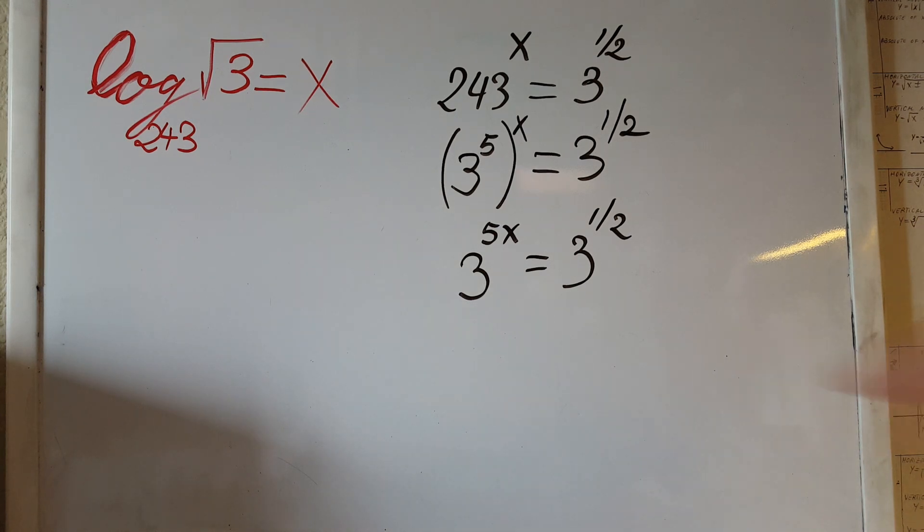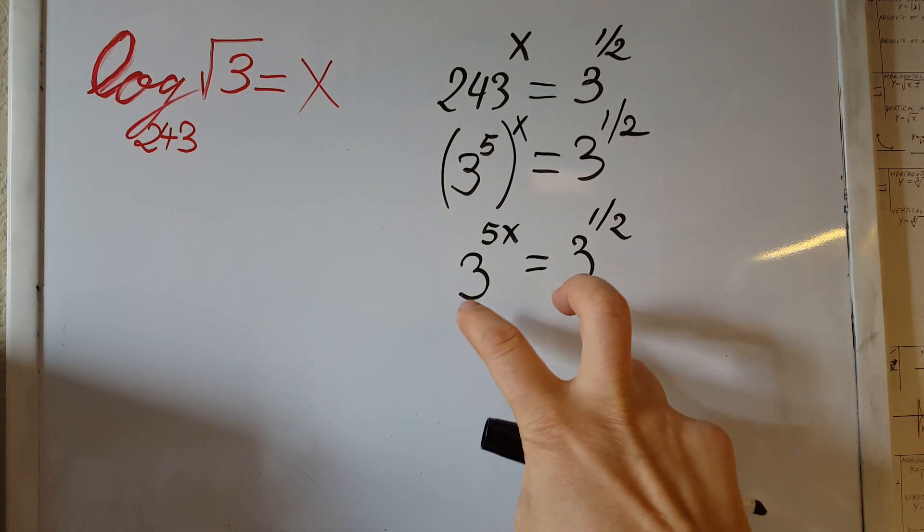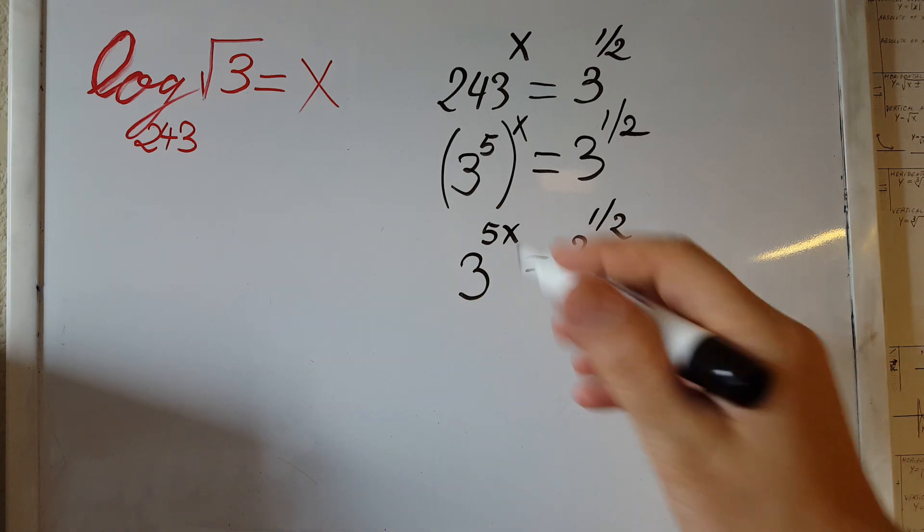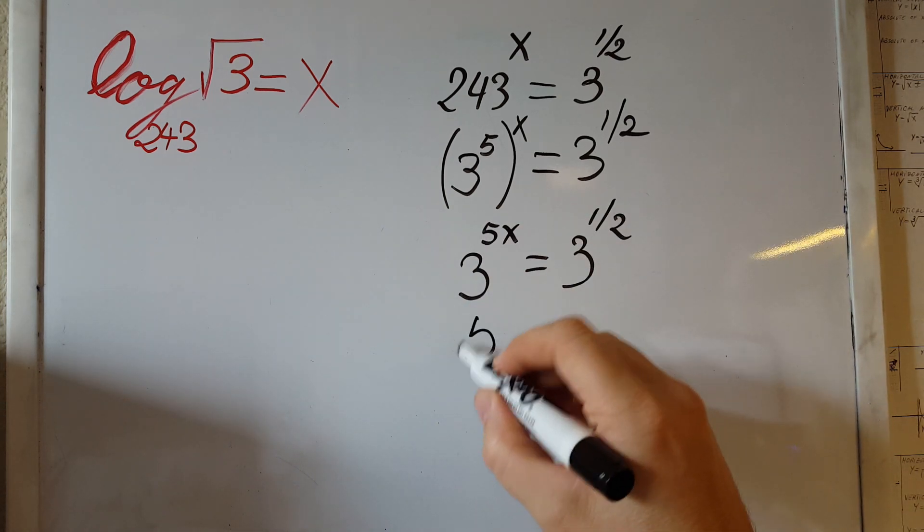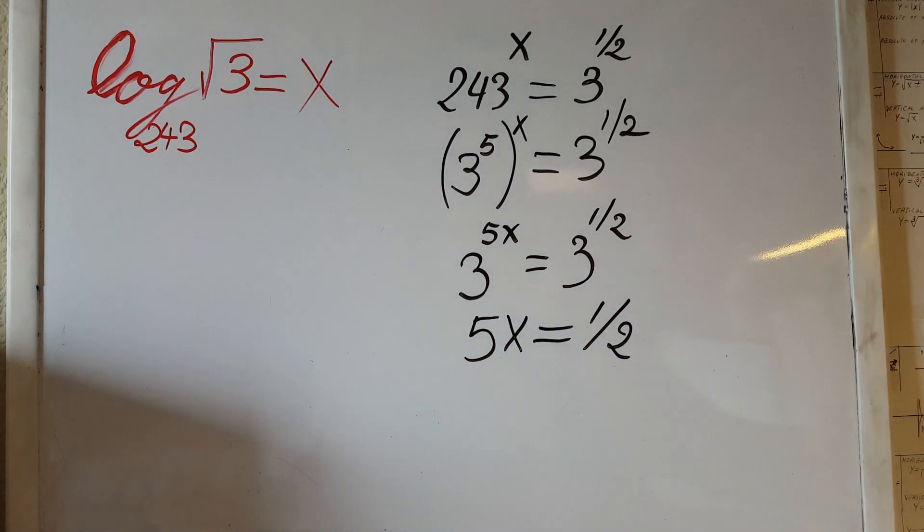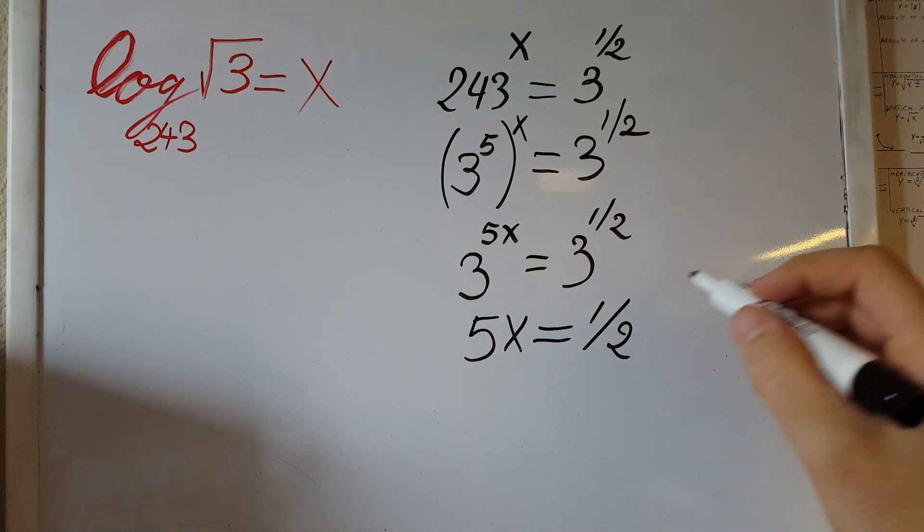Now we arrived to the place where we have the same base on both sides, therefore we can cancel them out. All we're going to have left is 5x equals one half.